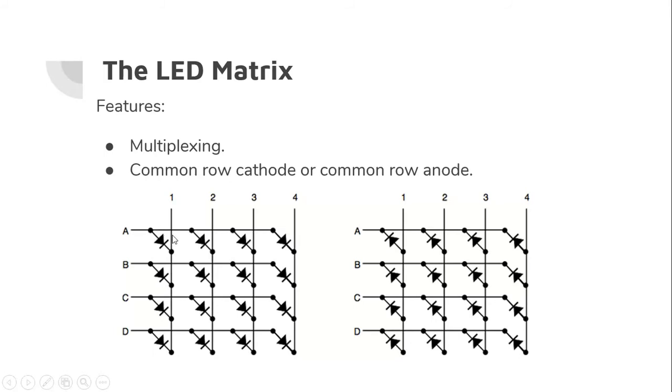So this figure to the left is the common row cathode. Because as you can see the cathode is common to all the rows. The rows A, B, C and D have all the cathodes in common. And over here the anodes are in common to the rows. And notice that the rows over here are in a plane that lies above the plane of the columns. So the plane of the rows is above the plane of the columns. And the LEDs or the diodes basically are connecting the rows to the columns falling vertically downwards.